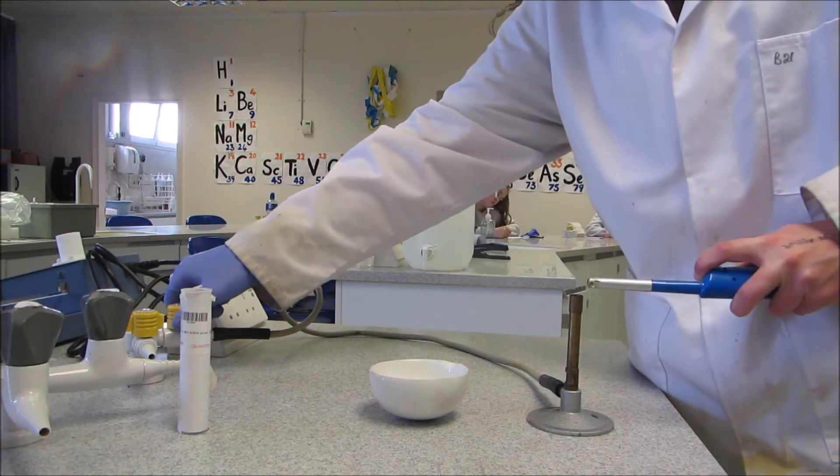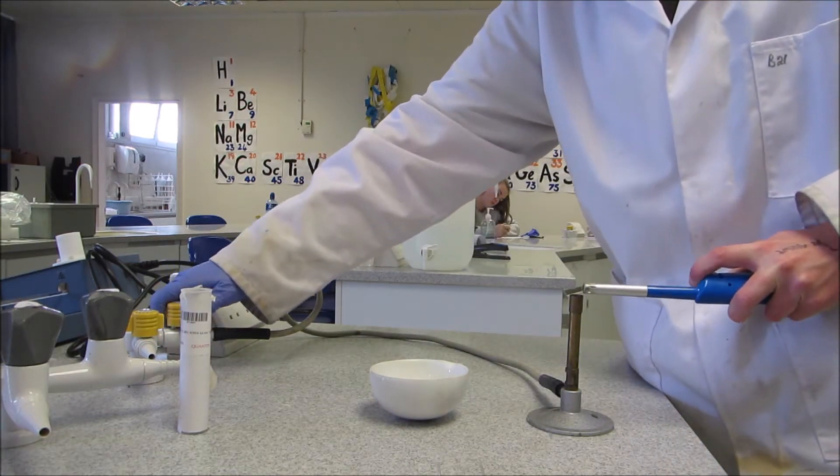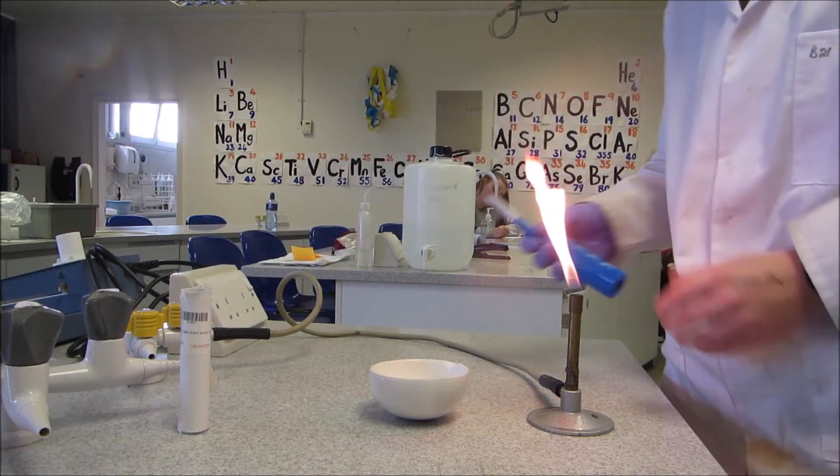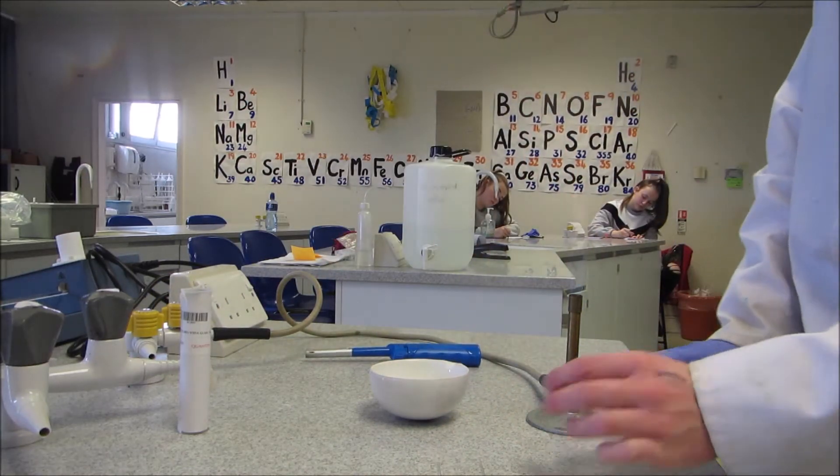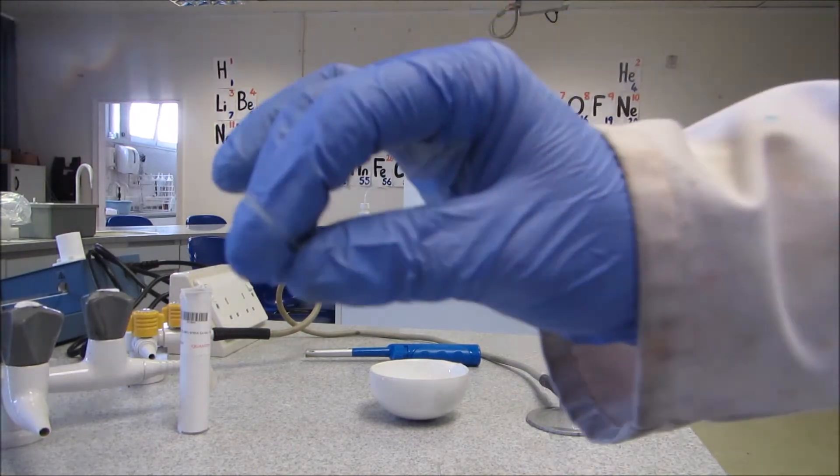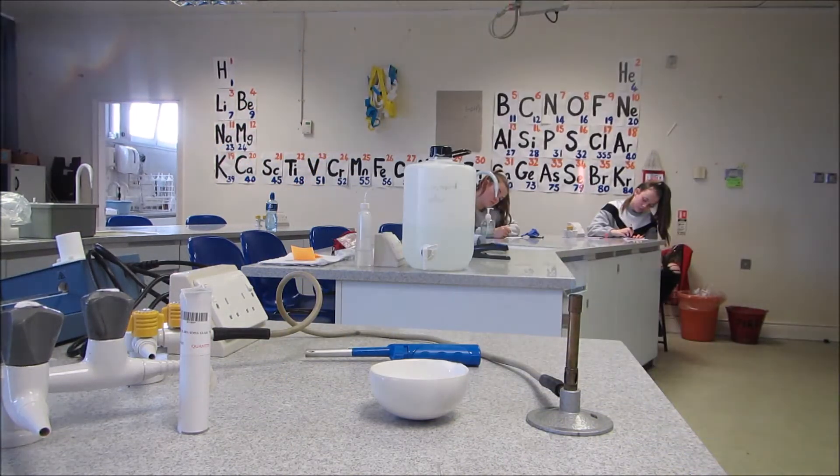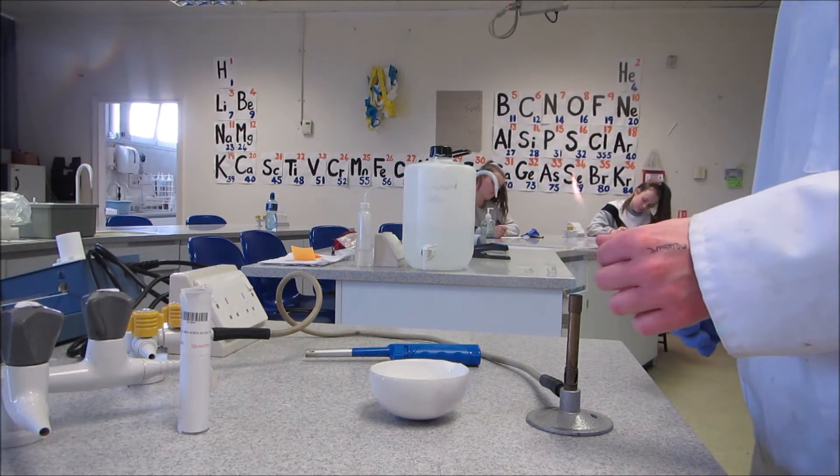So to measure the melting point of aspirin that you've made, firstly you've got to make a tube. I'm just using a capillary tube and you can see it's hollow in the center. So I need to make it so that it's round at the bottom.